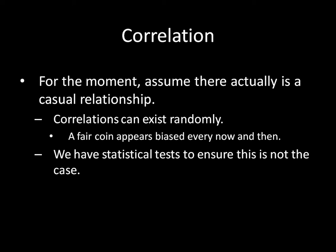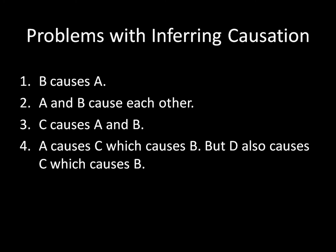But outside of randomness, how can we still have a correlation between A and B without A causing B? I'm going to give you four different explanations. First, it could be that the causal mechanism is going the other way, where B is causing A. Or it could be that A and B are causing each other — not just A causing B, but also B causing A. It could be that a third thing, C, is causing both A and B. And the last and most complicated one: A is causing C and C is causing B, but a fourth thing, D, is also causing C, which causes B — so the causal relationship is very complicated. I'm going to go through each of these four problems with an example, and we're going to talk about the democratic peace at the end.